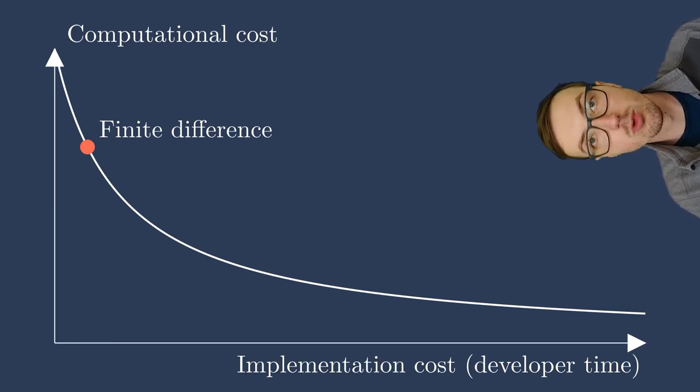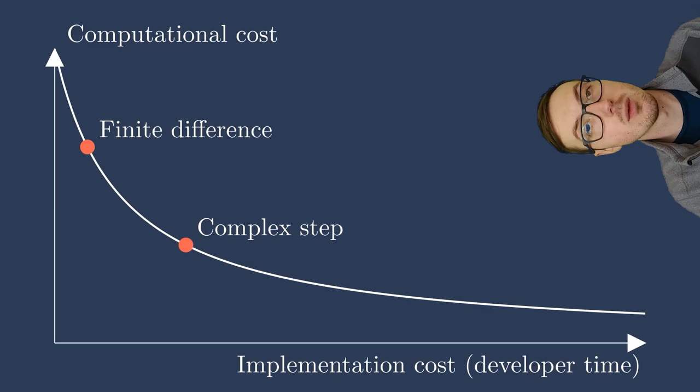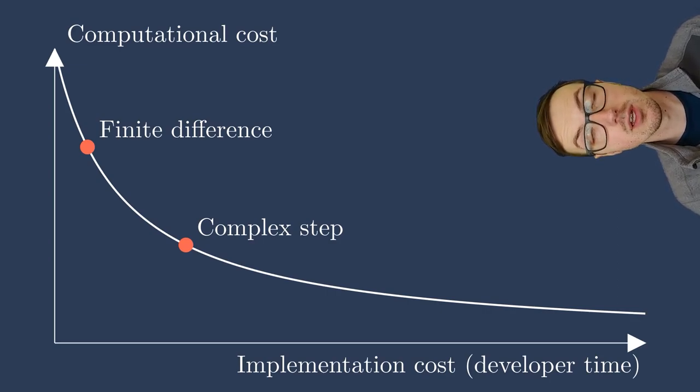Next up on this kind of spectrum of derivative computation methods, we have complex step. Here it might take a little bit more developer time because you need to make sure that your model is complex safe and that complex numbers can be passed around entirely within the model, tracking the sensitivities. This is much like the finite difference method, but it results in much more accurate derivatives down to machine precision. So this may decrease the overall cost of your optimizations by providing much more accurate derivatives.